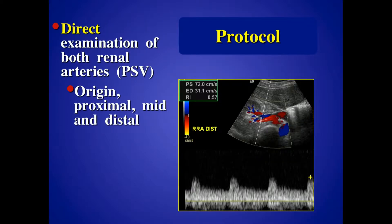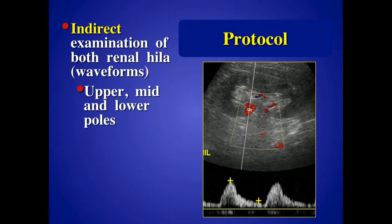We do the direct examination of the renal arteries, getting samples at origin, proximal, mid, and distal, making sure angle corrected, easy to review from each side. Then we're going to take waveforms from the segmental branches inside the kidney to look for changes that may suggest there was an occult stenosis that we missed. Sometimes there are duplicated arteries which may have a stenosis you'll pick up with the indirect exam, or even less commonly a segmental artery stenosis you'll pick up with this test.